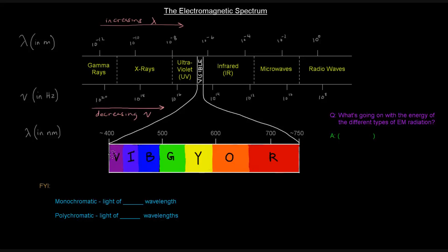Now, I do have some terms down here that are just for your information. If you hear the term monochromatic, when referring to light, it's speaking about light of one wavelength. Whereas, if you hear polychromatic, it's referring to light of many wavelengths. Those are just terms that you might hear.